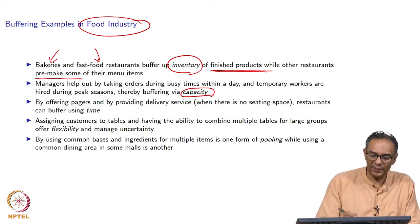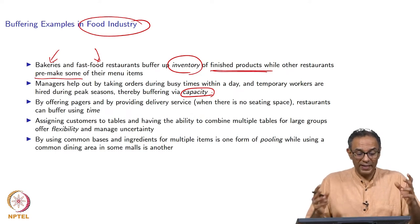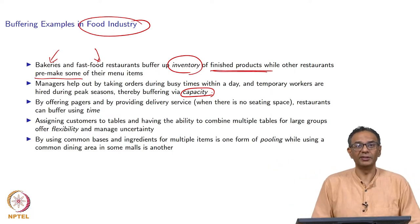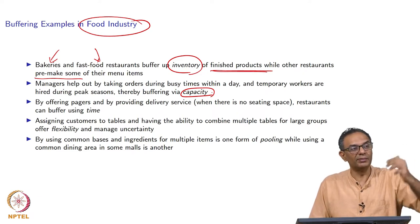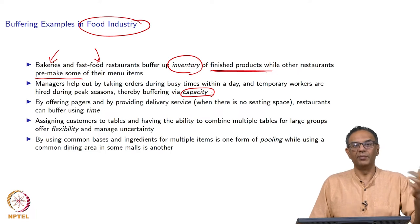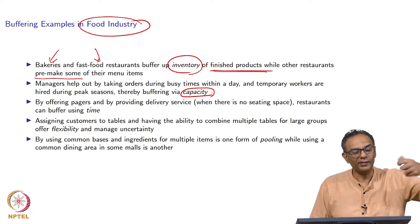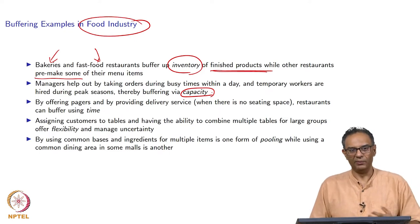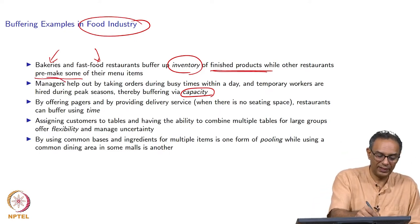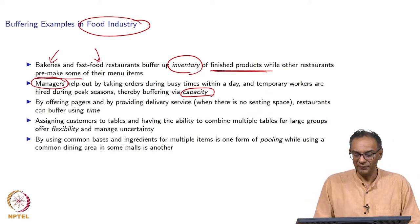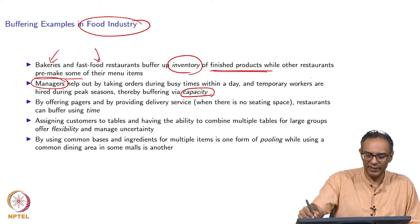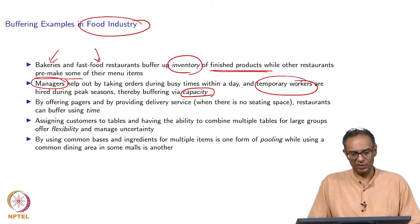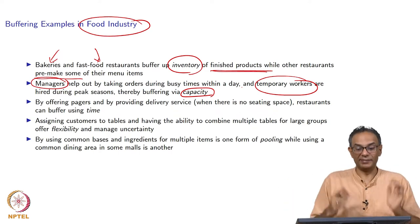The second type is capacity buffering. Many times managers help out by taking orders when all the waiters are busy — the manager runs up, provides the menu, and ensures the customer is attended to. This increases actual capacity beyond what is normally available. Sometimes during holiday periods and peak seasons, you hire temporary workers to come and work in your restaurants. In this way, you can increase the capacity very nicely.